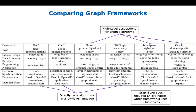Referring to the paper's table, there are three systems — Galois, SuiteSparse GraphBLAS, and GraphIt — which are high-level abstractions, and three systems — GAP, GKC, and NW Graph — which directly code their algorithms in low-level languages. Also worth noting: GraphBLAS requires 64-bit indices because it was designed for huge graphs, while all graphs in the GAP benchmark suite fit within 32-bit index space, giving the other systems a slight performance edge.